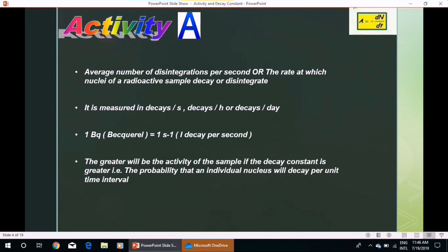One becquerel equals one decay per second. The greater will be the activity of the sample if the decay constant is greater—that is, the probability that an individual nucleus will decay per unit time.